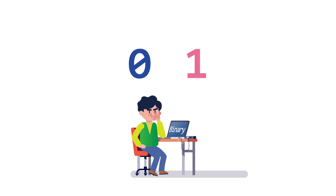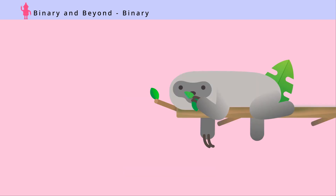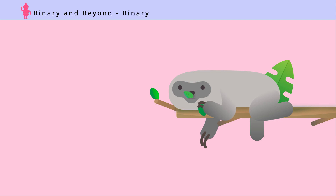How would you count to 10 if you only have 2 numbers, 0 and 1? Let's try counting in binary: 0, 1, 10, 11, 100, 101, 110, 111, 1000, 1001. Mr. Sloth can only count in binary using numbers 0 and 1, because that is all he can afford with his two toes while hanging on a tree.